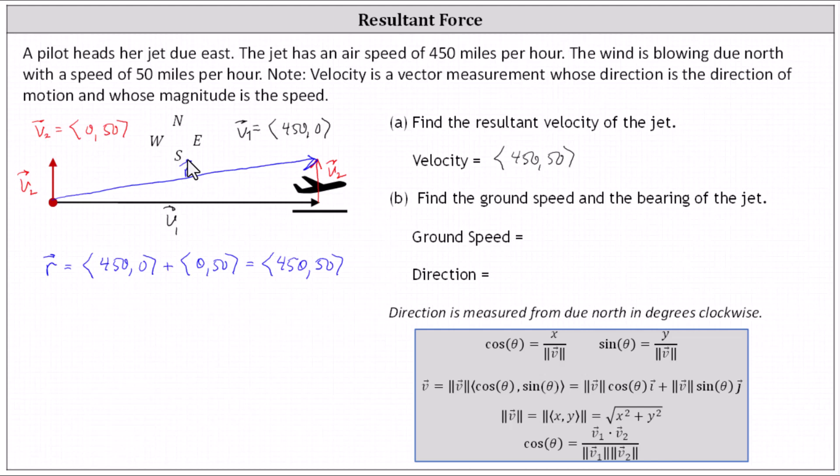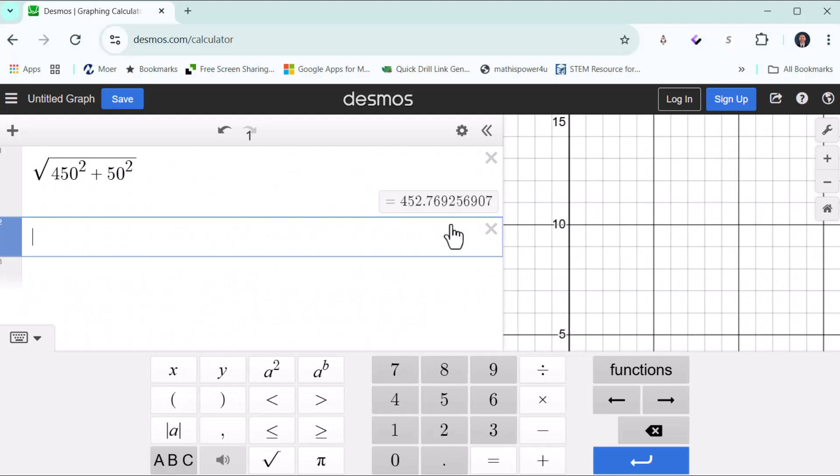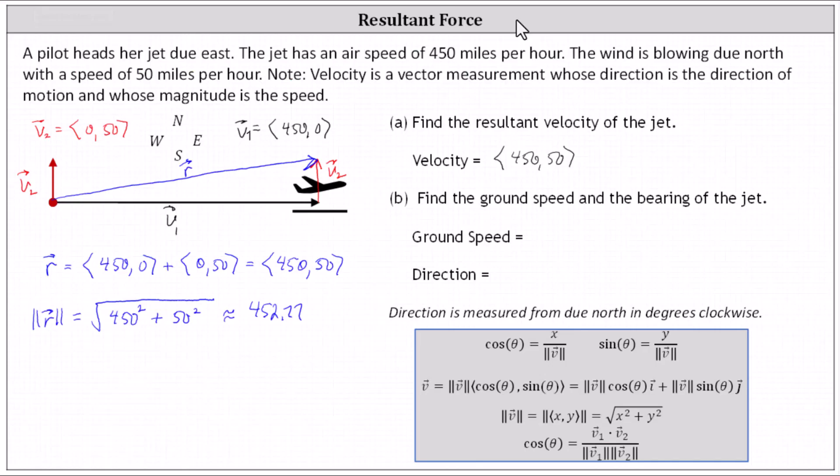And now the ground speed is the magnitude of vector r. So let's determine the magnitude. Remember the magnitude is like the length of the vector. It's equal to the square root of the sum of the square of the components. And now we'll go to the calculator. The magnitude is approximately 452.77, which means the ground speed is approximately 452.77 miles per hour.